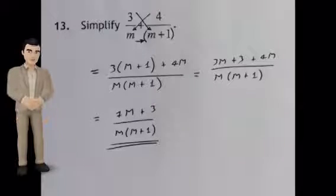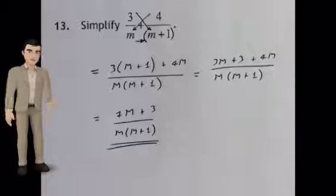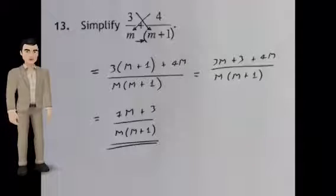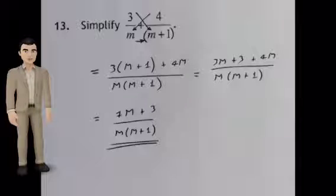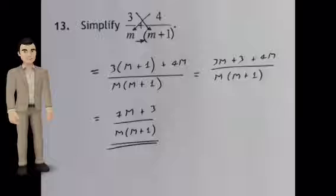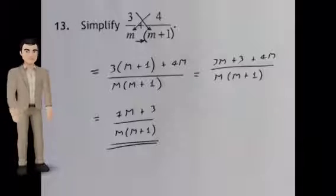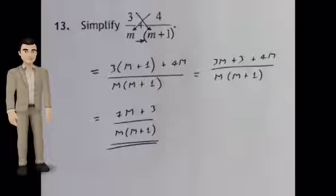We have 3 bracket m plus 1 plus 4m, all over m bracket m plus 1, which equals 3m plus 3 plus 4m, all over m bracket m plus 1. This leaves us with 7m plus 3 over m bracket m plus 1, our final answer.